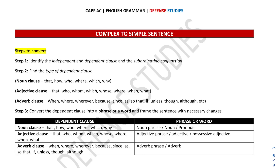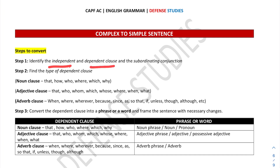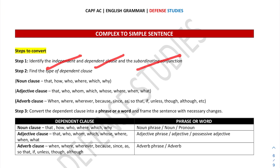In this video we would be learning how we can convert a complex sentence into a simple sentence. There are three steps to keep in mind. The first step is to identify the independent clause, the dependent clause, and the subordinate conjunction. Whenever you find a subordinate conjunction in a sentence, that sentence is called a complex sentence.